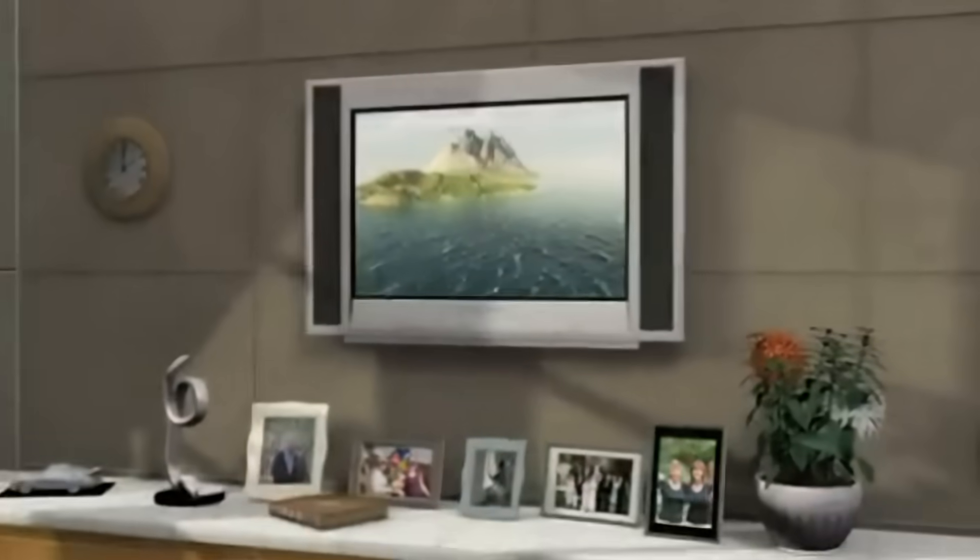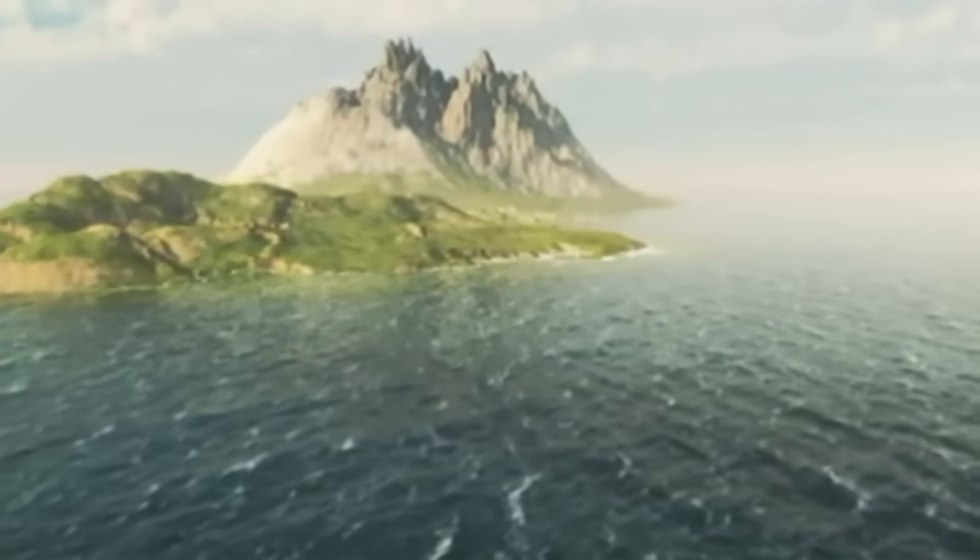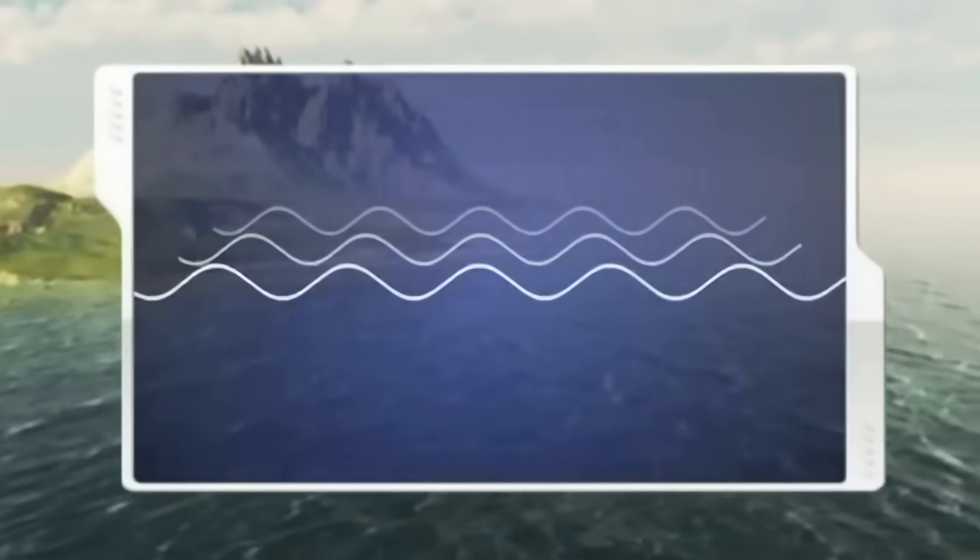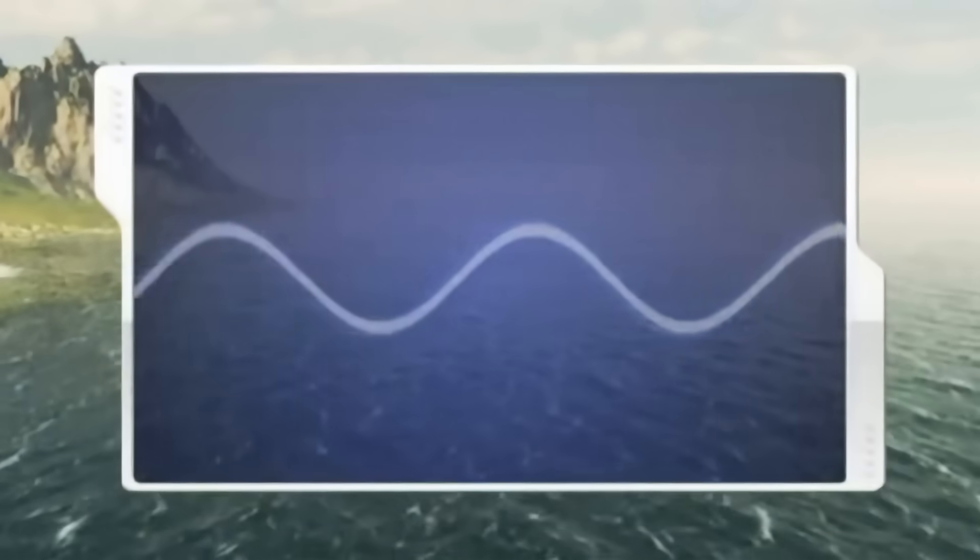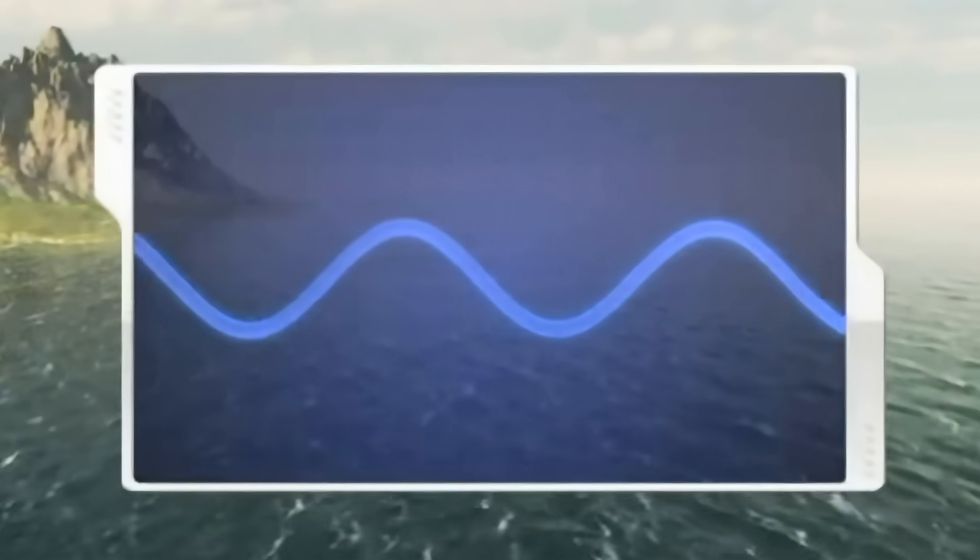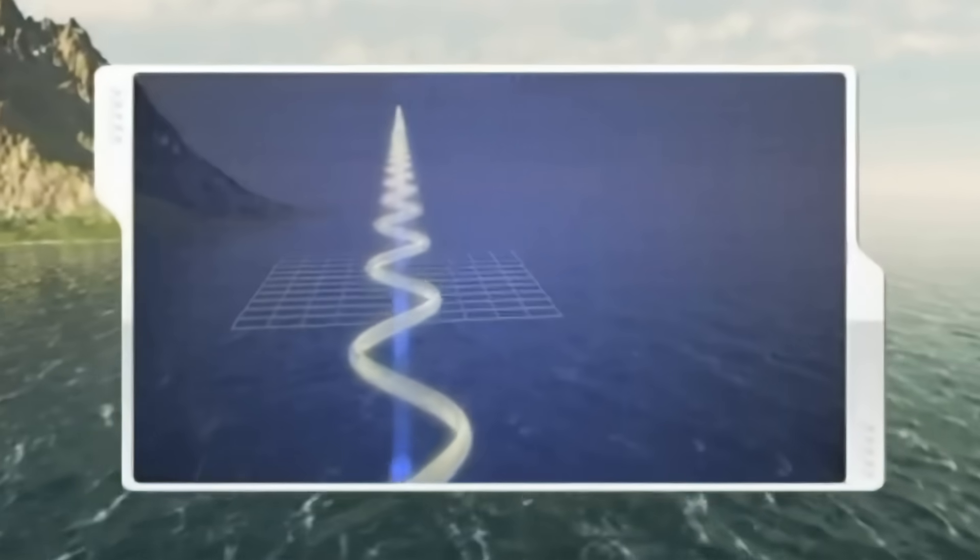Electromagnetic waves, or EM waves, are similar to ocean waves in that both are energy waves. They transmit energy. EM waves are produced by the vibration of charged particles and have electrical and magnetic properties, but unlike ocean waves that require water, EM waves travel through the vacuum of space.